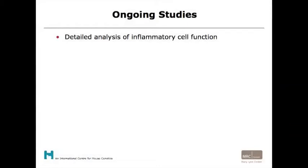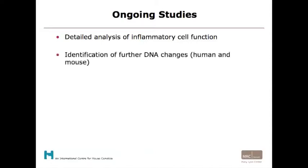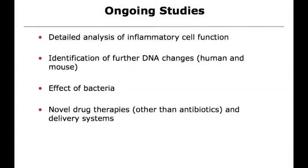Because we now know the pathways involved, we can start doing more detailed studies. Leaving aside the mice, we're looking at individual cells — how those pathways are affected in individual cells. We're looking at further DNA changes: can we find other genes associated with disease from either human or mouse studies? What is the effect of bacteria — does it make the disease worse? These mice don't have bacteria, so what is the interaction if you introduce bacteria? Does the disease get worse or is it unaffected? All those questions are being asked, alongside drug therapies.